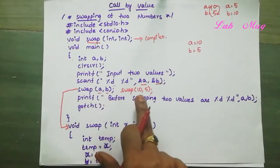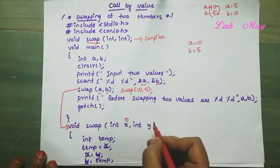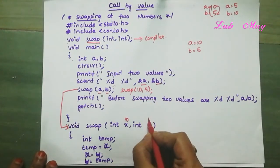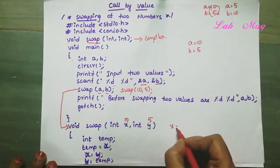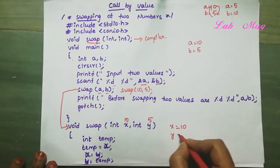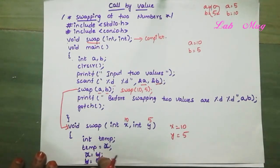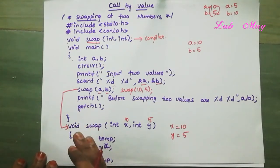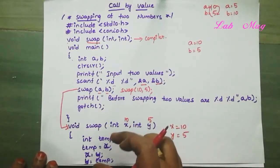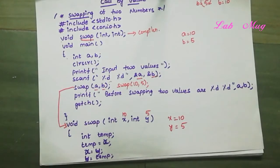The swap function is called and two values are sent: the first value 10 is stored in x, and the second value 5 is stored in y. Inside the function we also declare a local variable called temp to store a value temporarily.